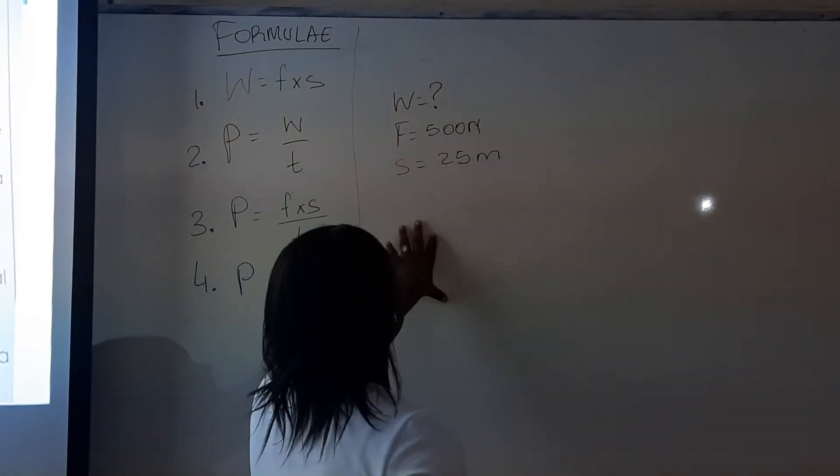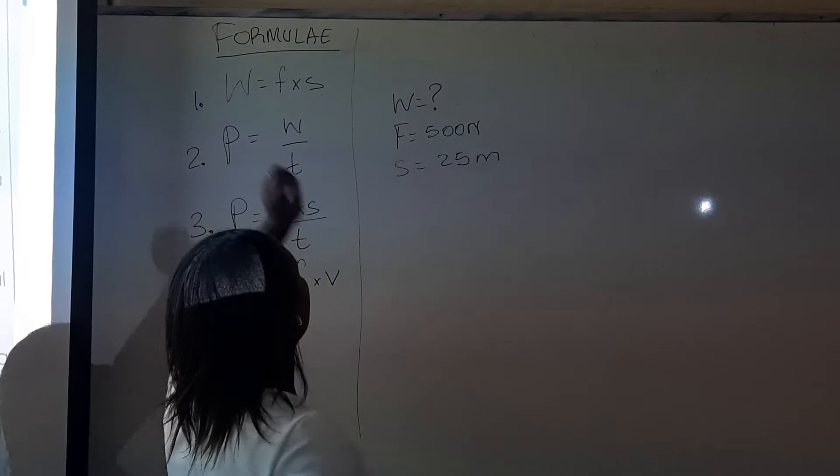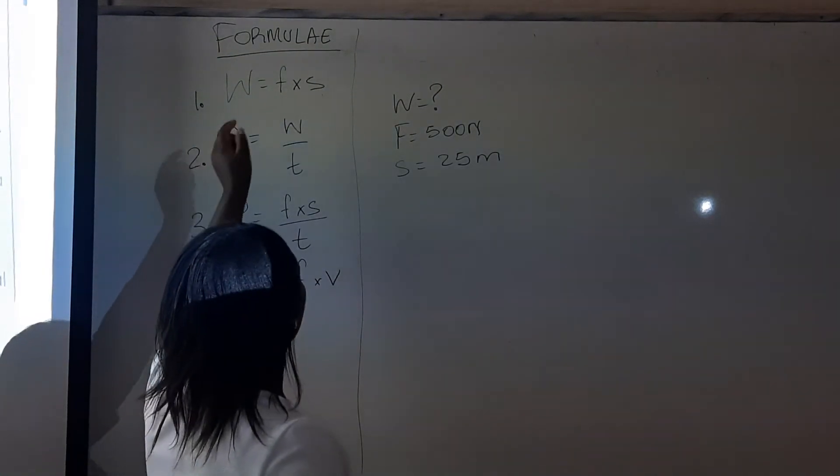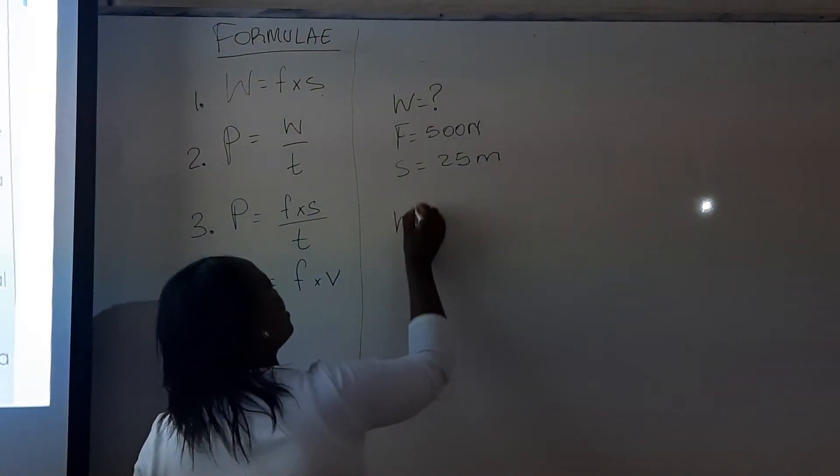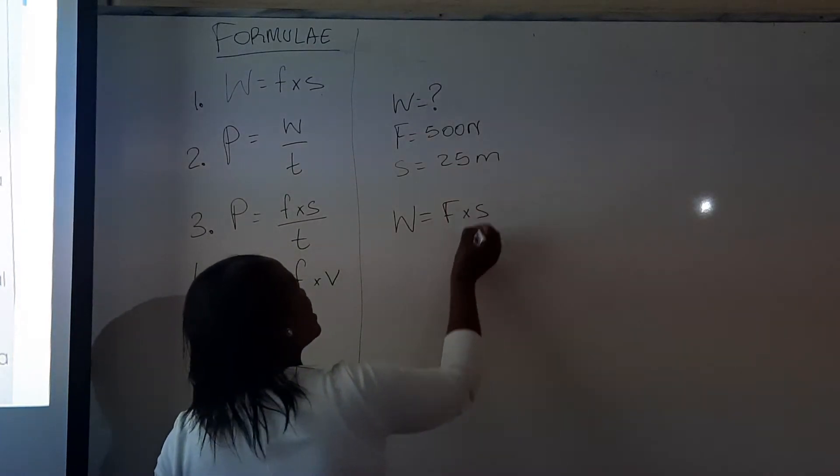Okay, so that is our given information. We have identified the unknown. Now, we must collect an equation. Equation number 1 will be suitable. Work done is force times distance.